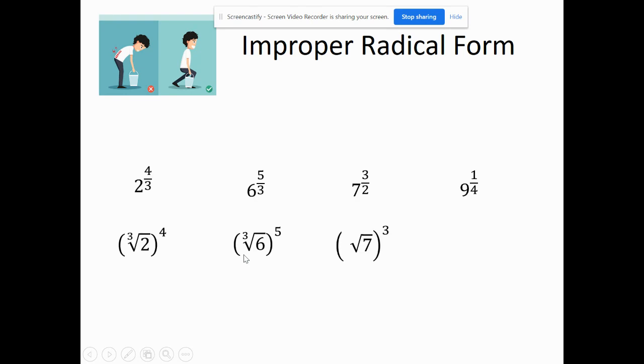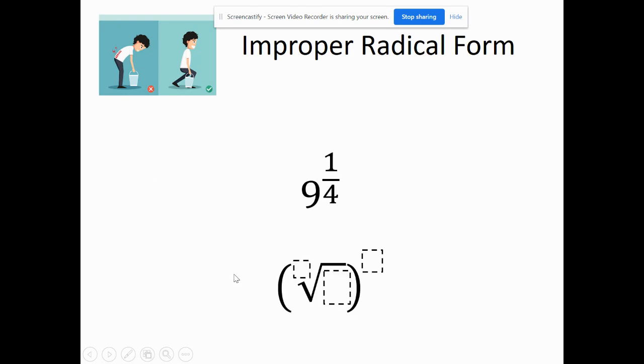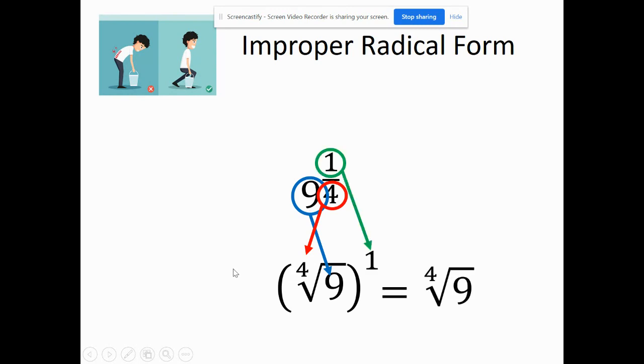Let's look at one more. Here we have nine to the one-fourth. The base would be nine inside the radicand. The four would be the root power, and this one is taken to the first power. So it would just be the fourth root of nine because we're not going to multiply by any other numbers.